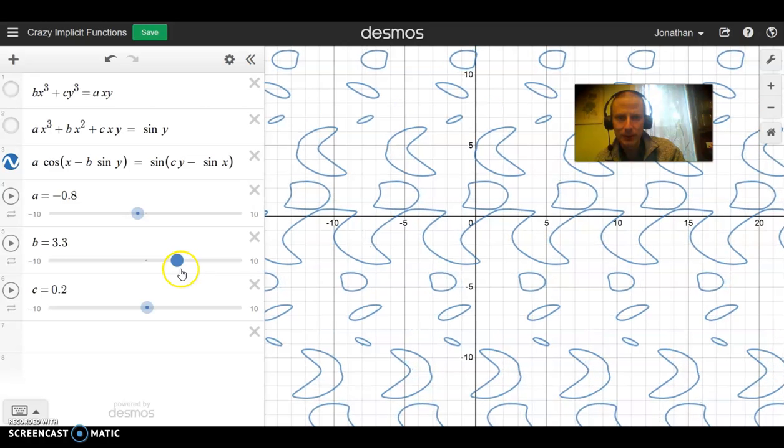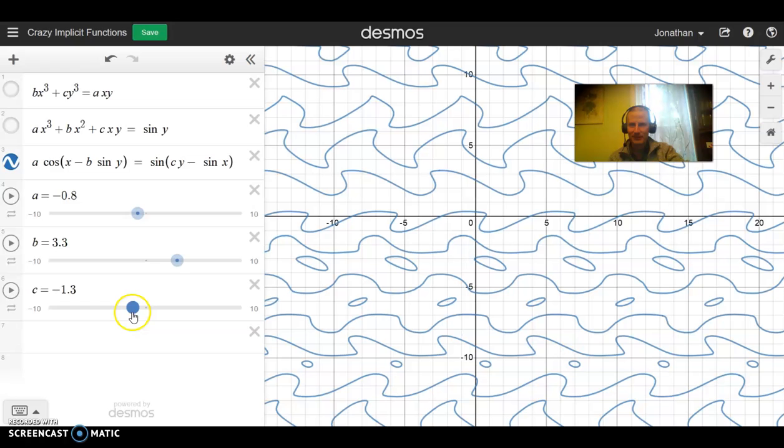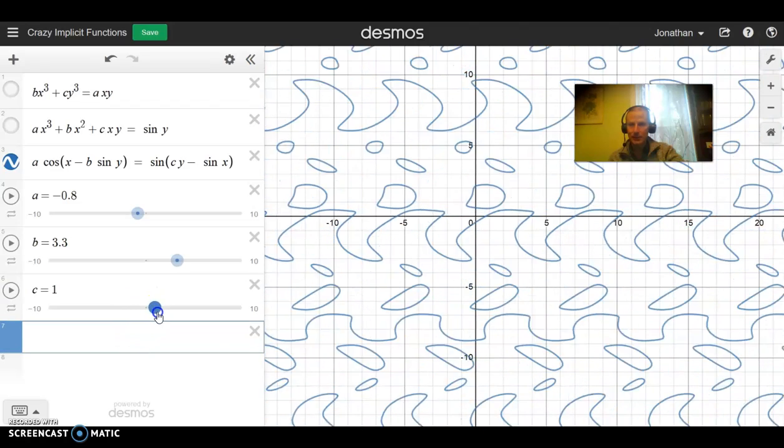And then when we move b around, it's really fun to watch the graphs morph into different things. Whoa, that was crazy. Oh, I made little pacmans. That's so exciting. Like, it's hard to believe that you get this. I mean, this is really neat, finding these different shapes. And then we'll try moving c around. Wow. Like, it's just so cool. And then if you want to, you can come along and use, I'll put a link to this, and you can try your own implicit functions, and feel welcome to use the values of a, b, and c to get them to change.